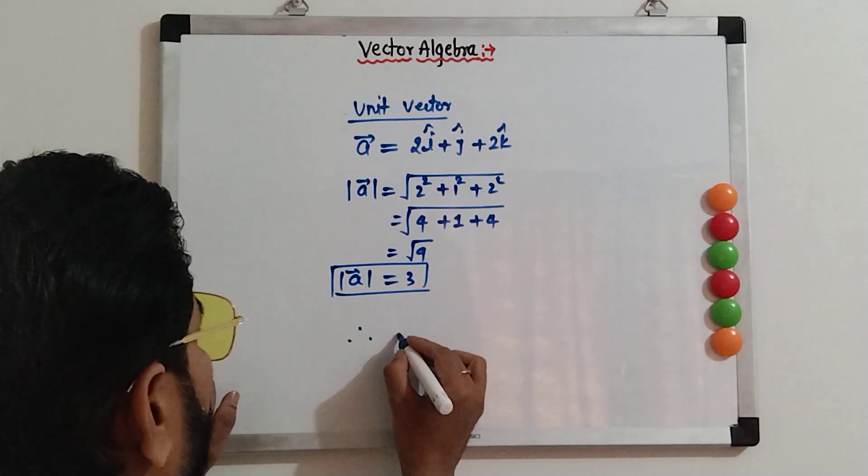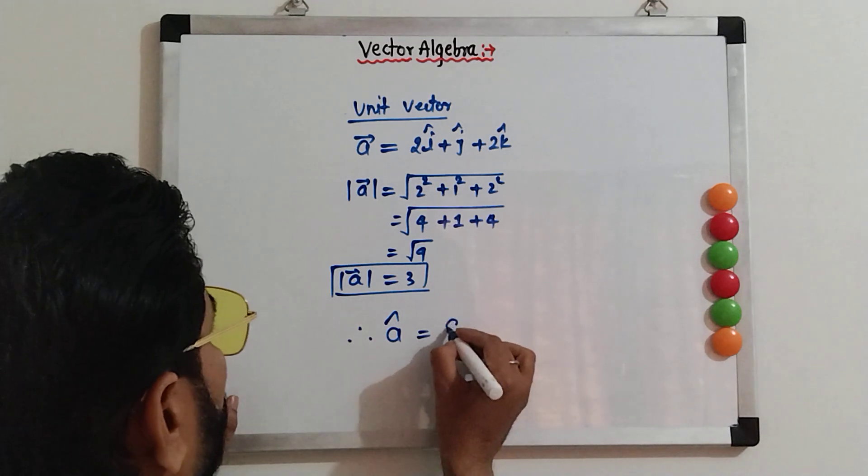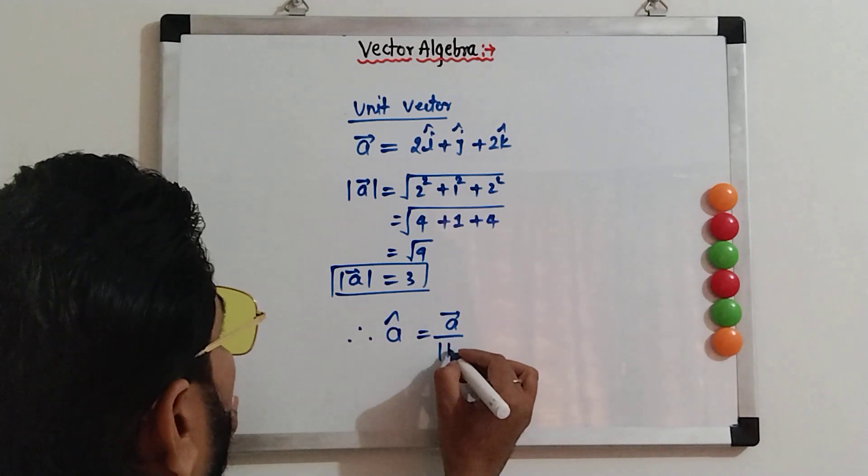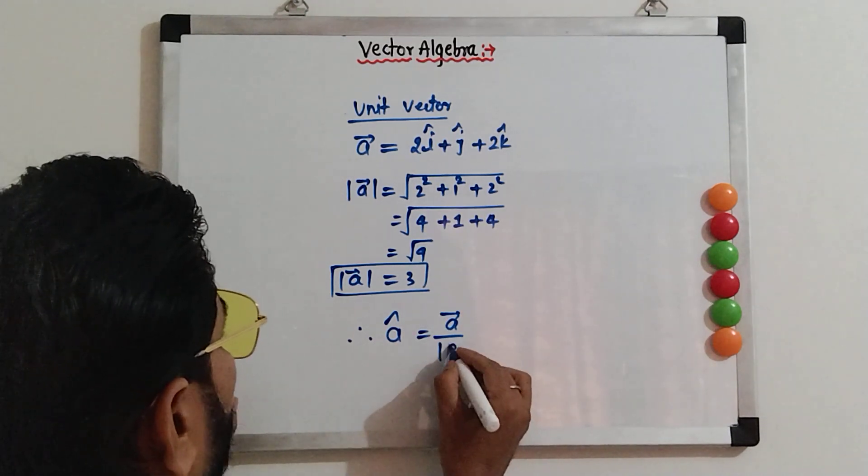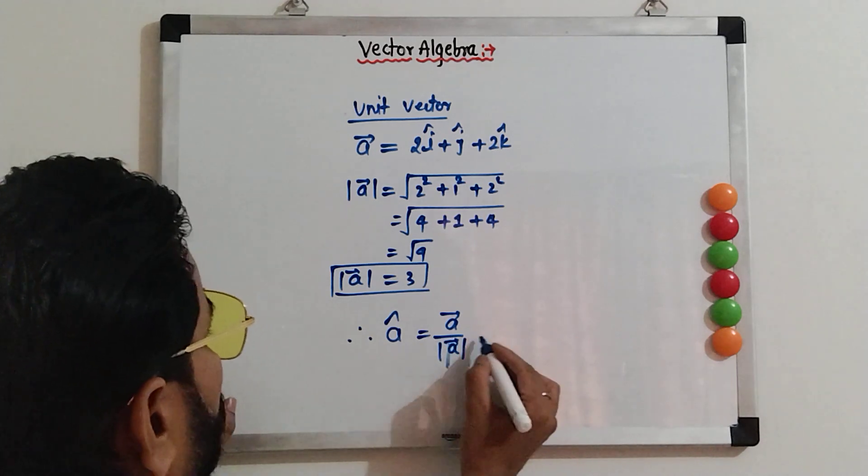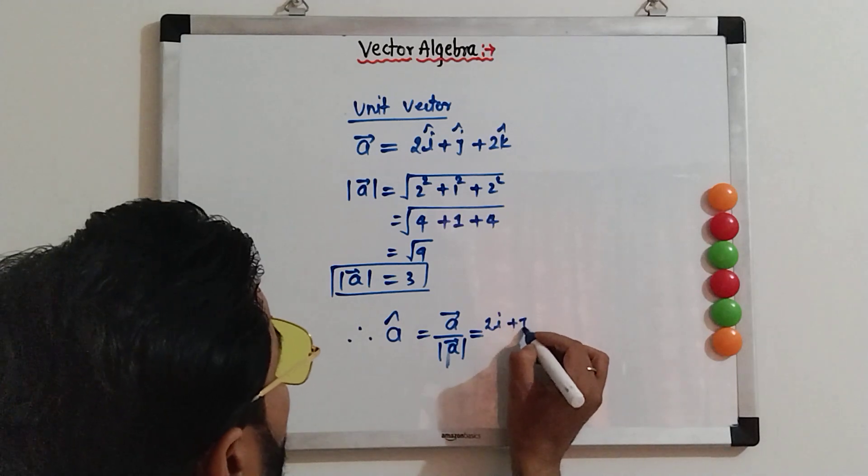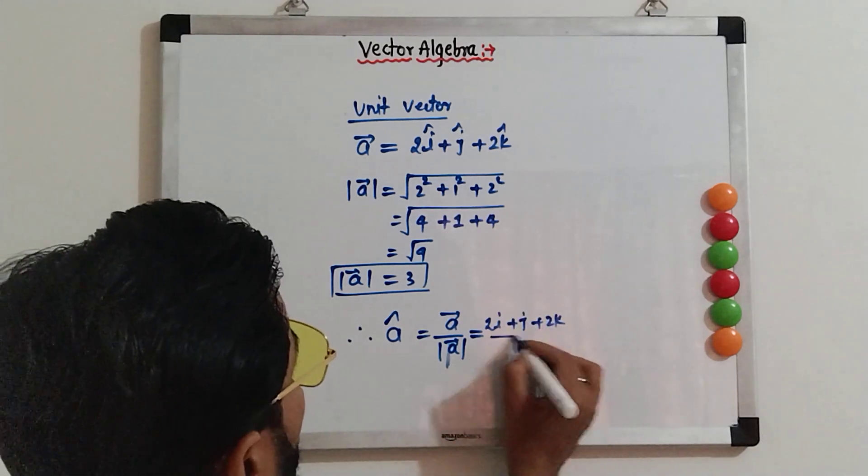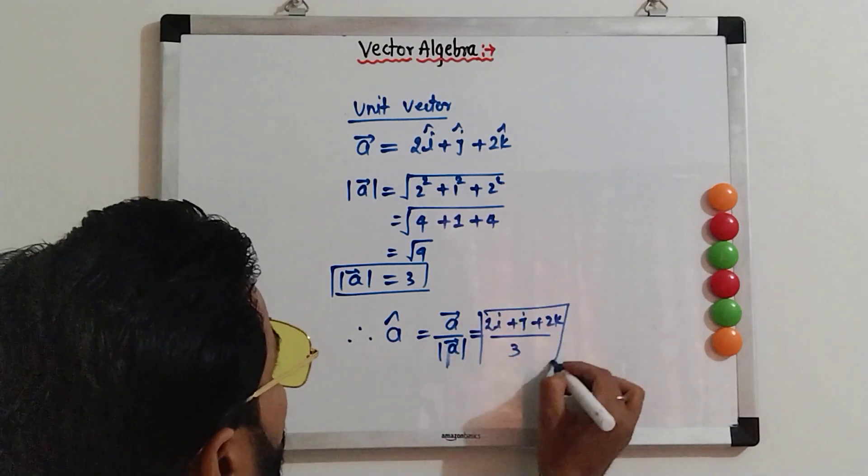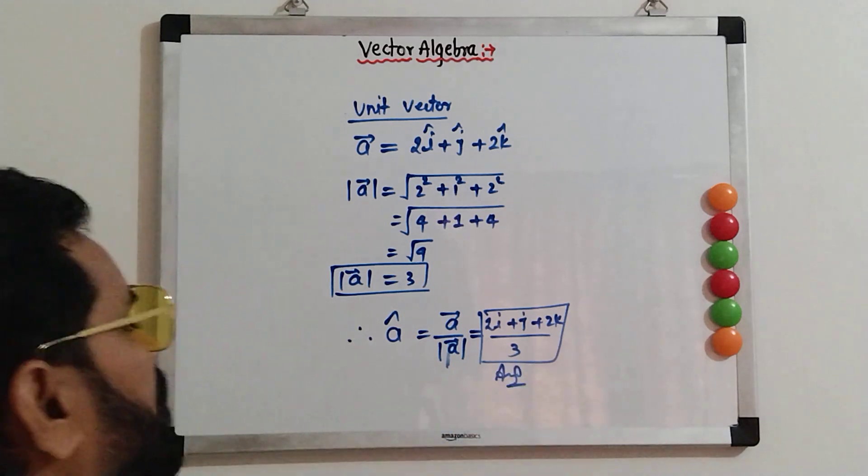Therefore, unit vector is represented by a cap is equal to vector a upon mod a. This is the formula to find out the unit vector. So, what we get? What is the vector? 2i plus j plus 2k upon 3. So, this is the unit vector.